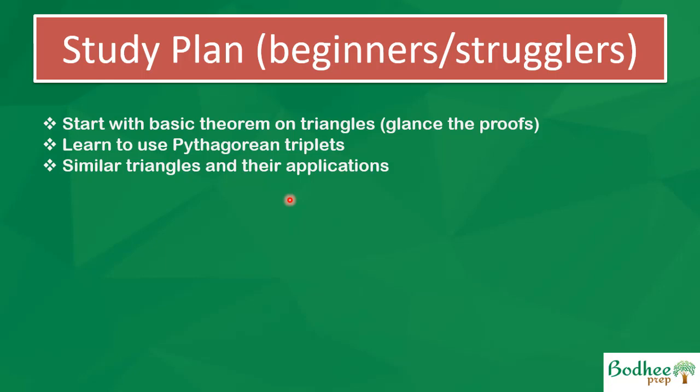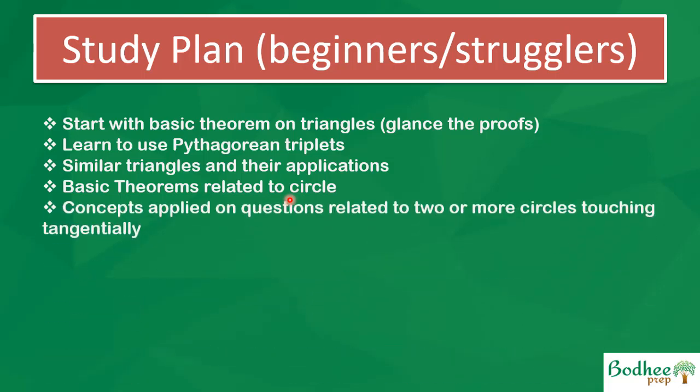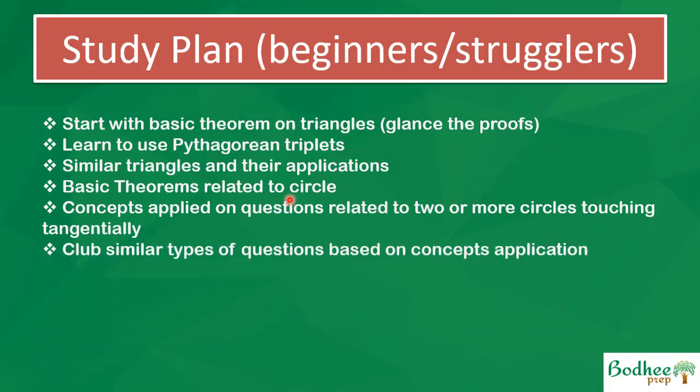With similar triangles and the ideas of ratios, you can solve questions and find areas in a very short time. Start with triangles, go to Pythagoras, then similar triangles, and then move to theorems on circles. Circle theorems include what is a tangent, what is a secant, the angle of a triangle placed with a diameter, and so on. Tangents are a very important part of circles.